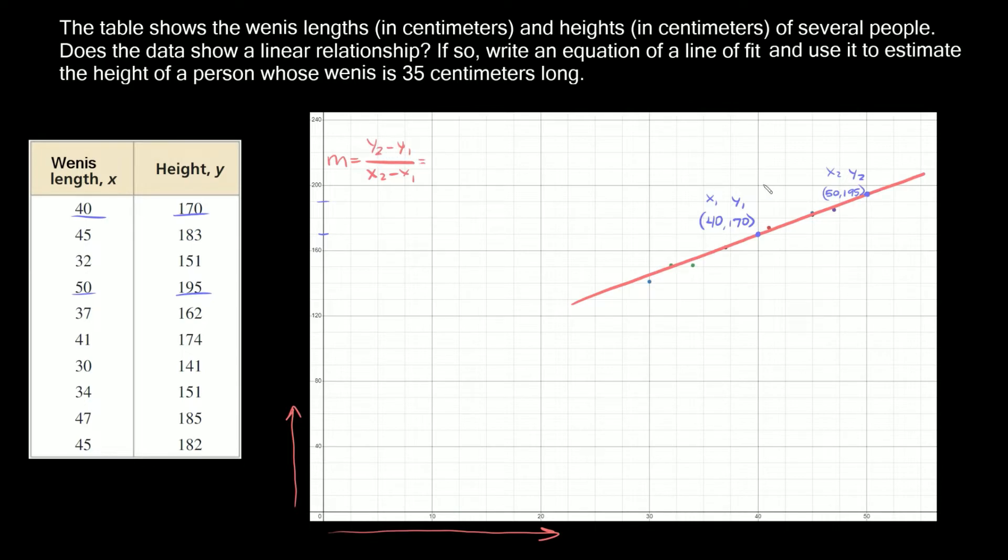Let's plug in what we have. y2 is 195 minus y1 which is 170, and that's over x2 which is 50 minus x1 which is 40. On top we get 25, on the bottom we get 10, and 25 divided by 10 equals 2.5. So the slope of this line is 2.5.